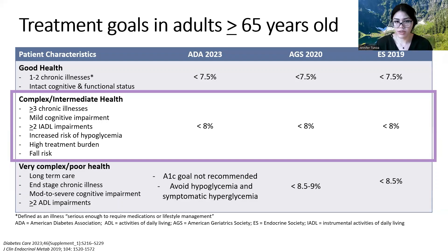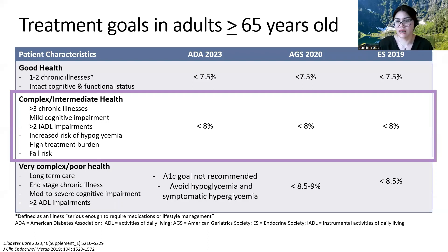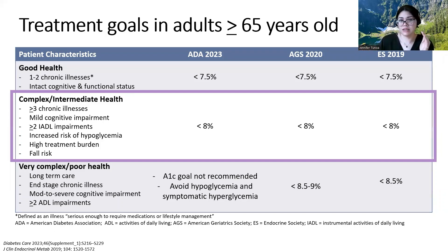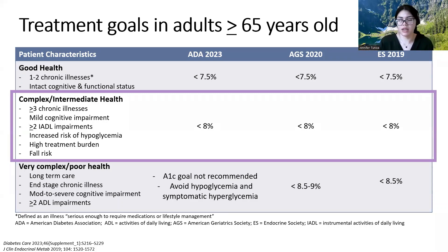For treatment goals, these are for assessing patients with diabetes who are 65 years and older. We have the newest guideline, which is the American Diabetes Association for 2023. The AGS — American Geriatric Society — also had some recommendations, and the Endocrine Society in 2019 also has their own guideline for older adults for treating diabetes. The goals based on the patient's characteristics are pretty similar across guidelines, and how you assess what health status or category a patient falls into is based on subjective and objective data — how many concomitant chronic conditions they have, their functional and cognitive status, and whether they have an end-stage chronic illness.